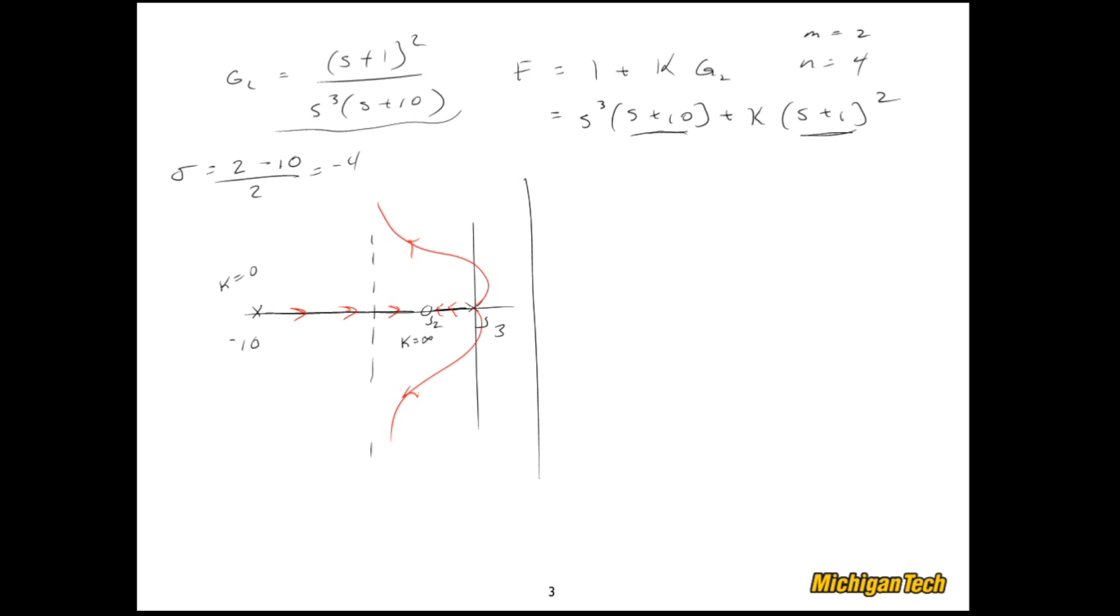So what this says is that for k equals zero, we have a whole bunch of closed loop poles at the origin. As we increase k along here, the system is actually unstable until we pass up this point. And then the system is stable for very high values of k. Now let's look at the Bode plot.